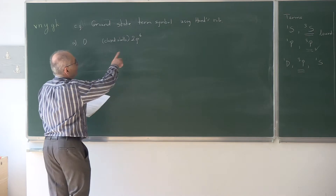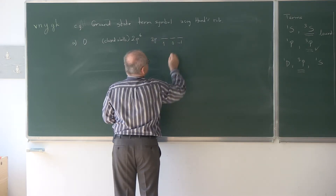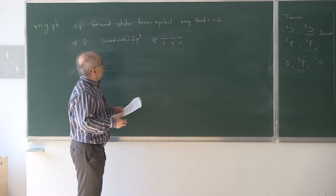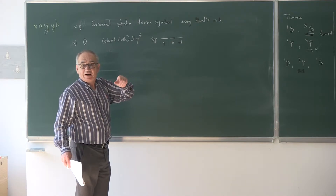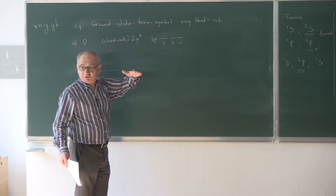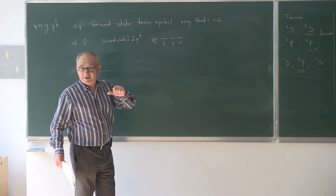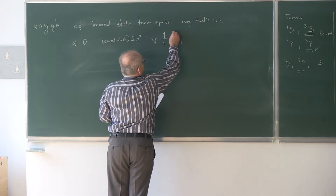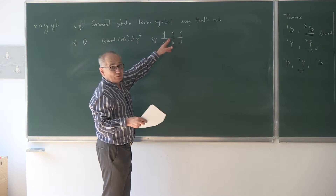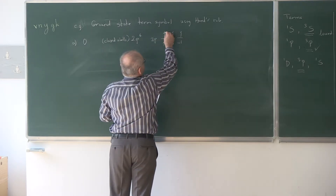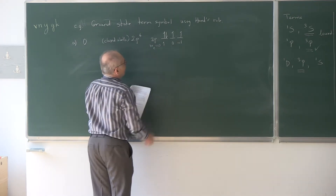Let us start with oxygen. The electron configuration has closed shells and the open shell is 2P⁴. Let us use a spin diagram. This is a 2P orbital with ml values of +1, 0, −1. According to Hund's rule, the term with the highest S value is lowest in energy — that is what we mean by ground state. For S to be highest, ms must be highest.